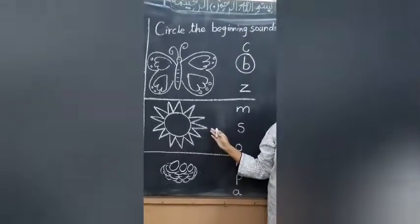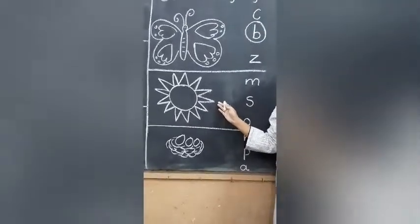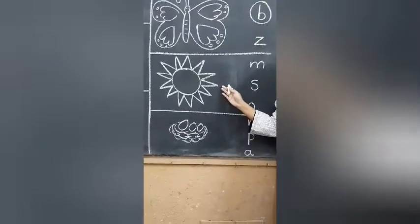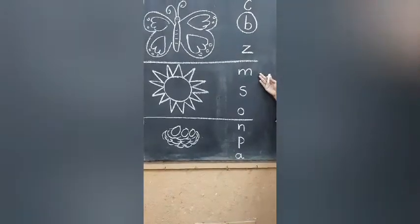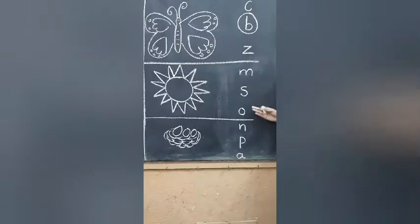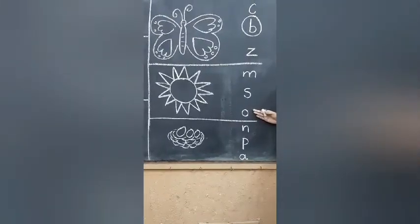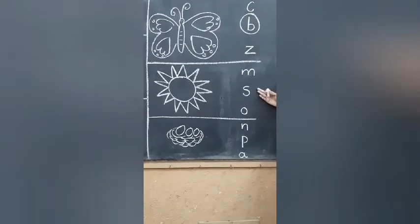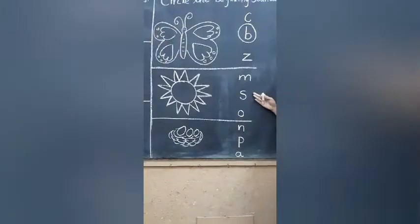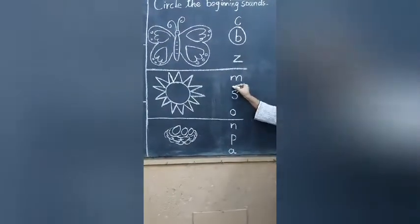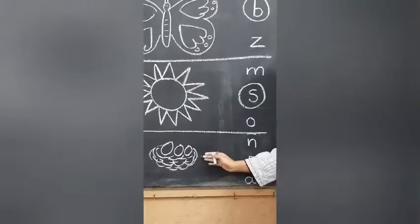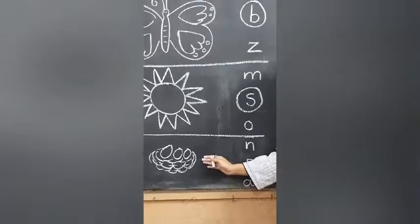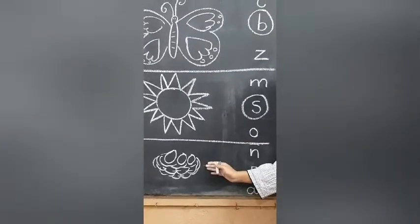The next picture is sun. Does this letter make the sound of sun? No. Does this letter make the sound of sun? No. Does this letter make the sound of sun? Yes. We have to circle it. Our next picture is nest.